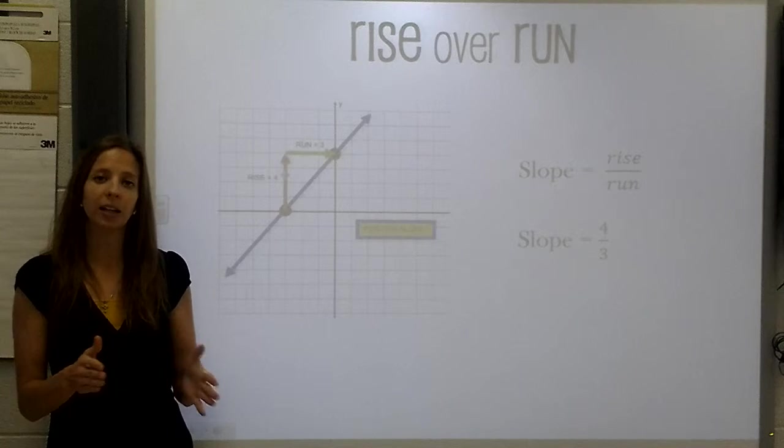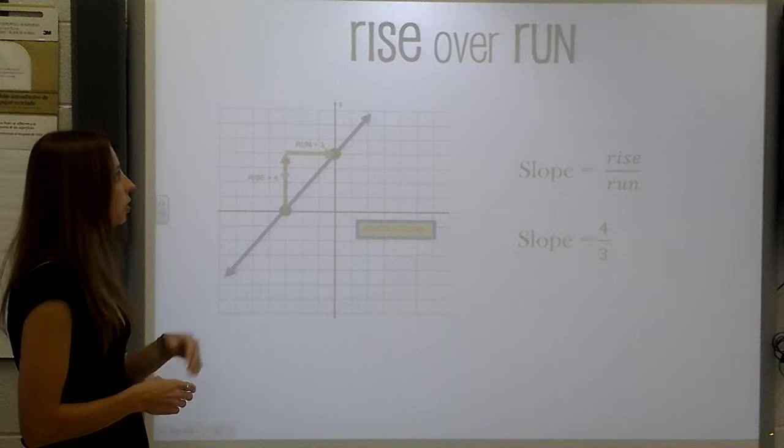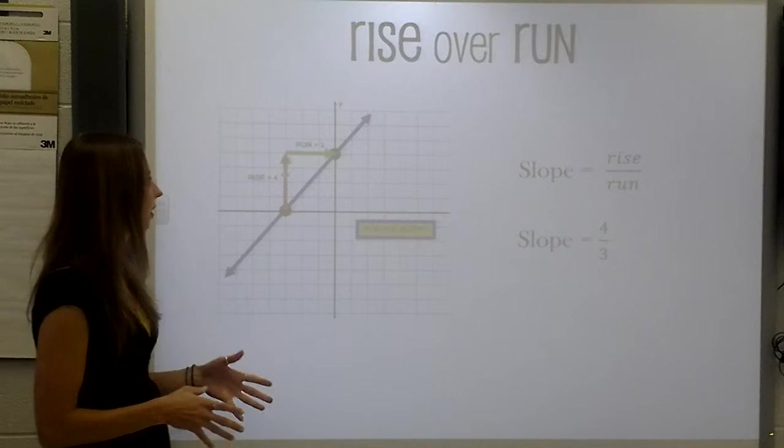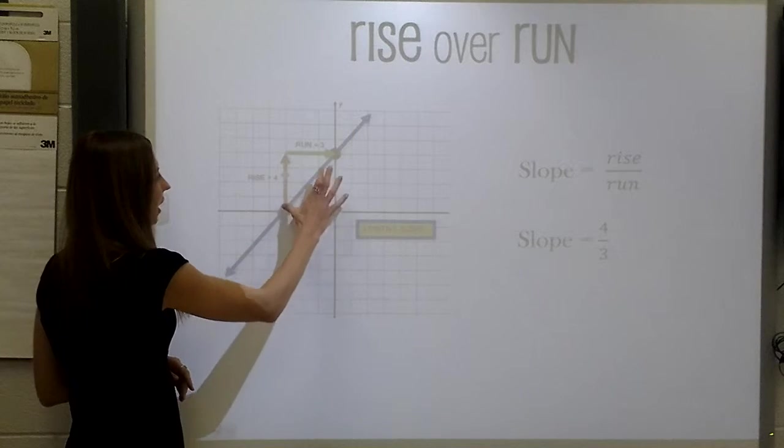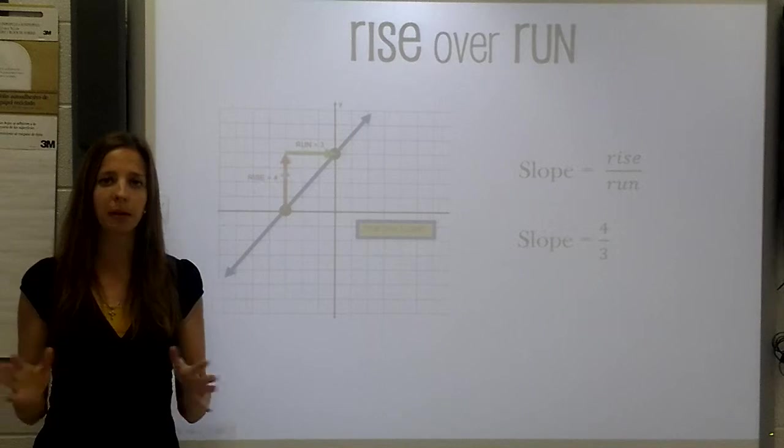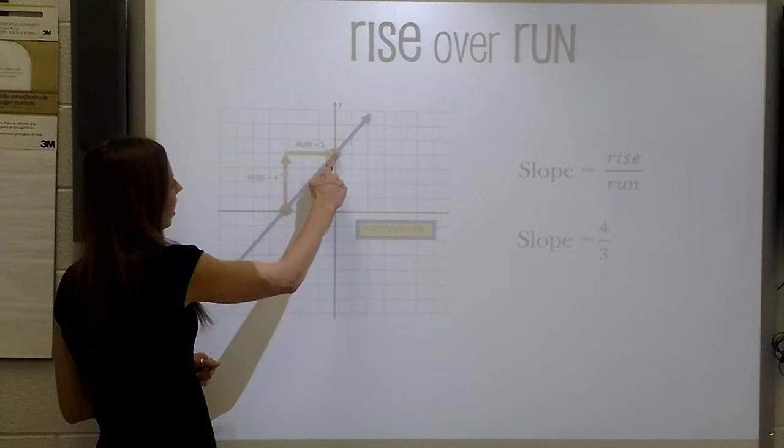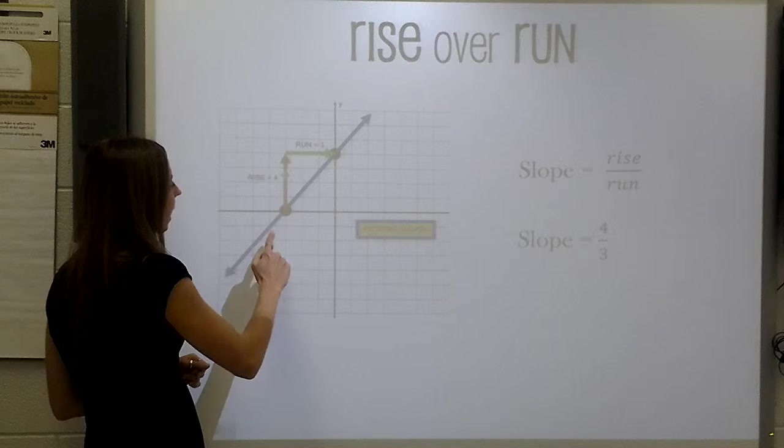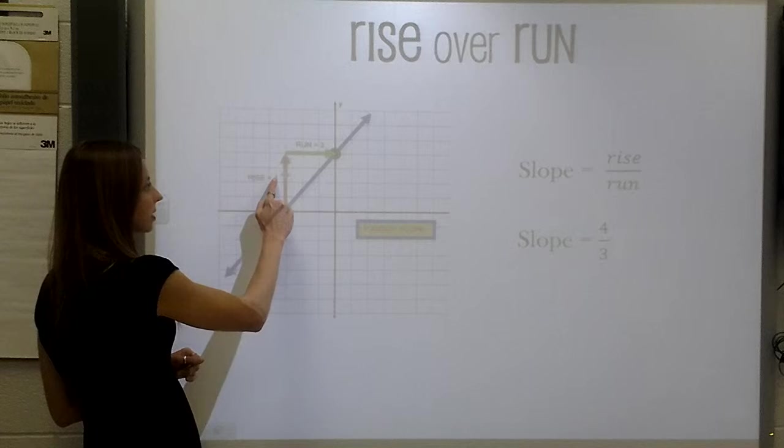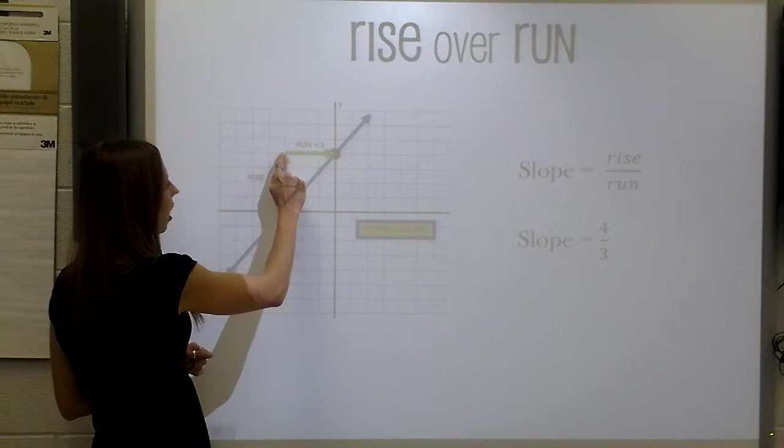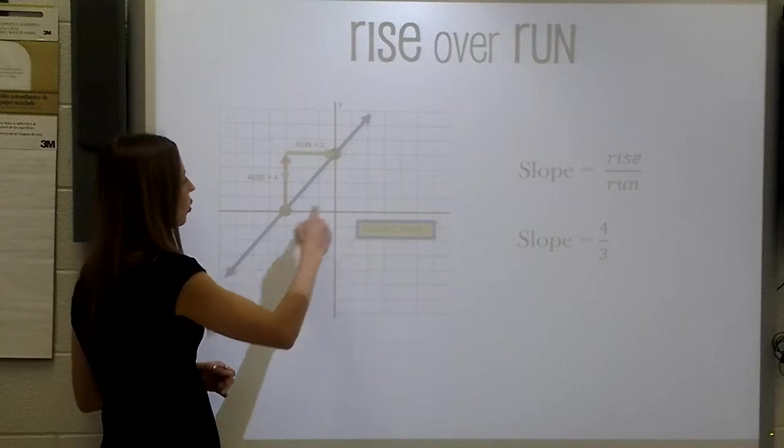Now, if you are given a line on a graph, you can quickly determine your slope using the rise over run formula. It is very simple. You take a look at the line and you find two points on your line. It can be any two points on that line. And what you are going to do is create a triangle. You are then going to count the number of squares that you rise and the number of squares that you run. And it always goes rise over run.